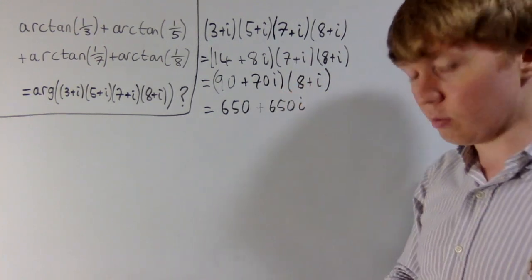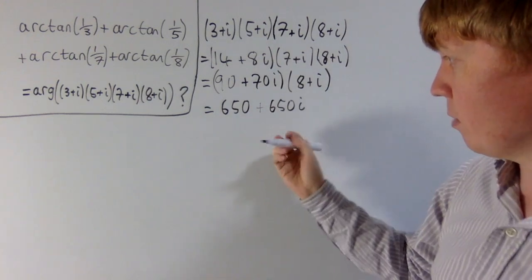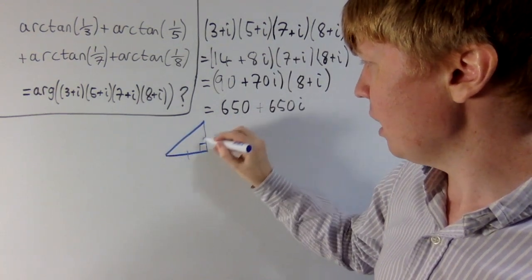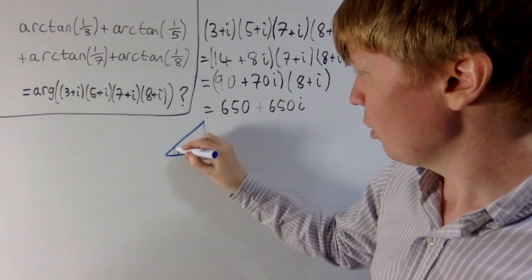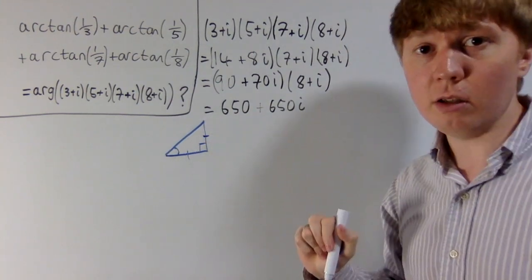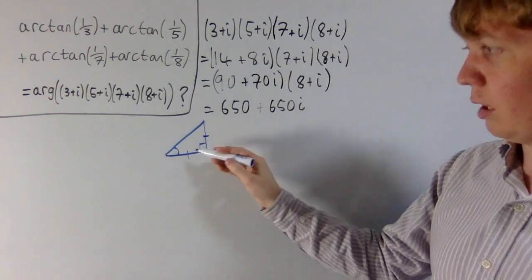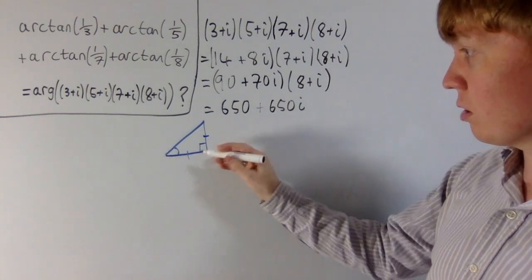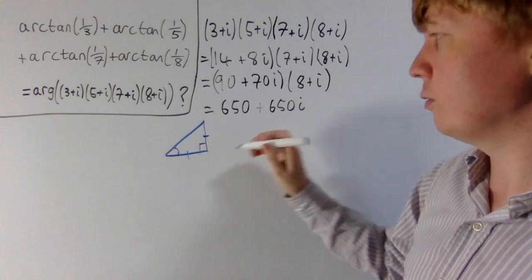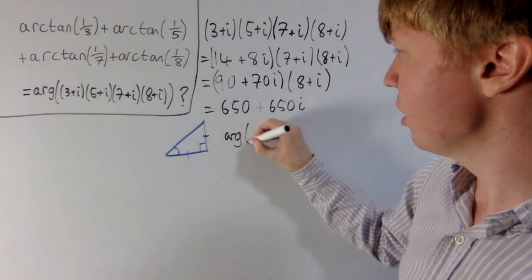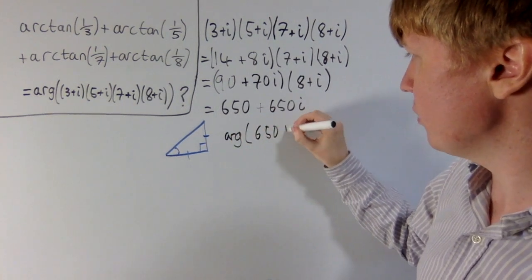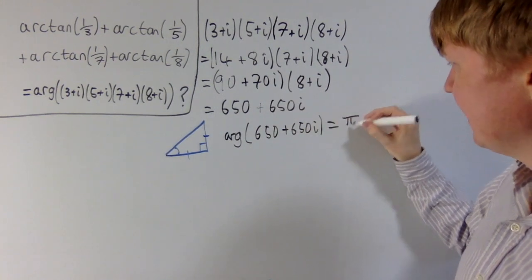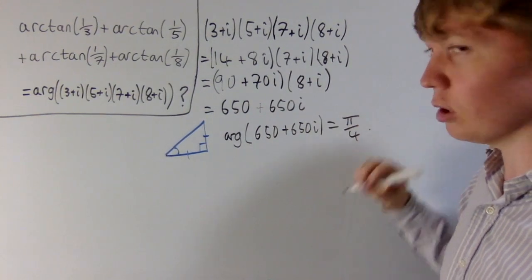This is very nice — drawing the complex number in the complex plane, we've got an isosceles right-angle triangle, so the argument of this complex number is just pi over four, or 45 degrees. Since the real part equals the imaginary part in six hundred and fifty plus six hundred and fifty i, the argument is equal to pi over four.